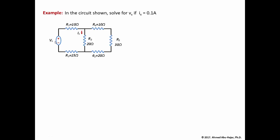In this particular circuit, we are asked to solve for Vs, given that Ix is 100 milliamps or 0.1 amps. So we know the value of Ix, but we need to solve for Vs. I call this the reverse problem — in the previous one, you find R equivalent, then find total current, and from that find any voltage or current. This problem is reversed: we're given current Ix and want to solve for Vs.